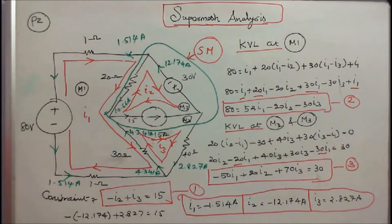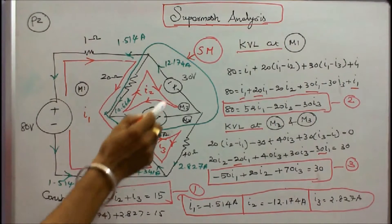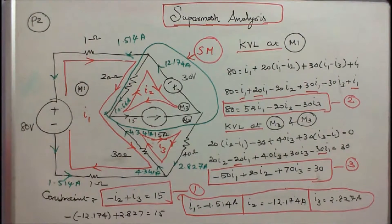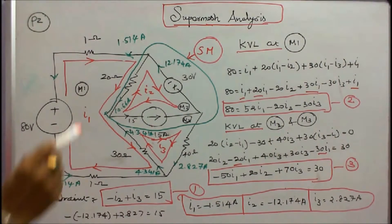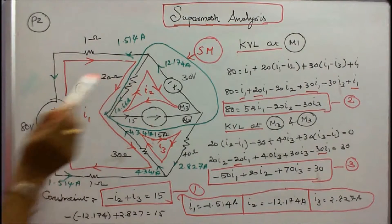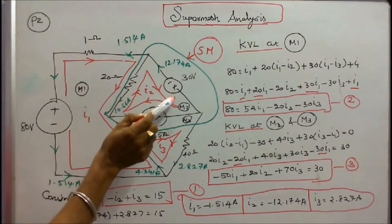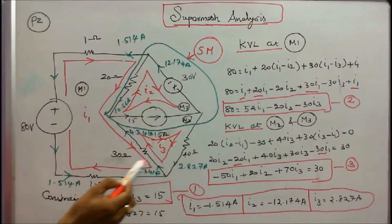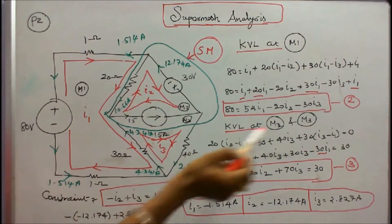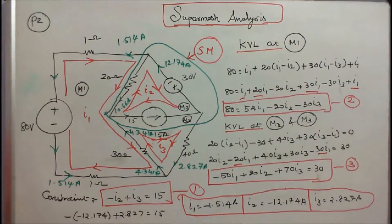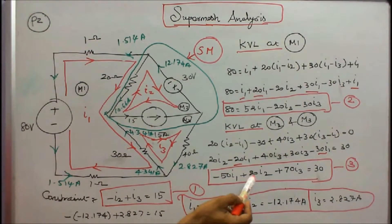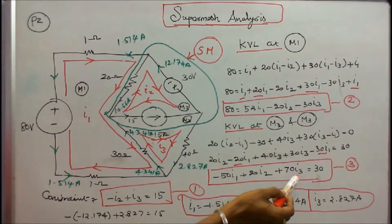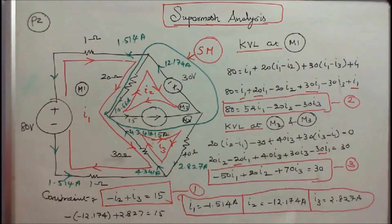Now I apply Kirchhoff's voltage law at meshes 2 and 3: 20 into (I2 minus I1) minus 30 plus 40 into I3 plus 30 into (I3 minus I1) is equal to 0. Simplifying, I get minus 50 I1 plus 20 I2 plus 70 I3 is equal to 30. This is equation 3.